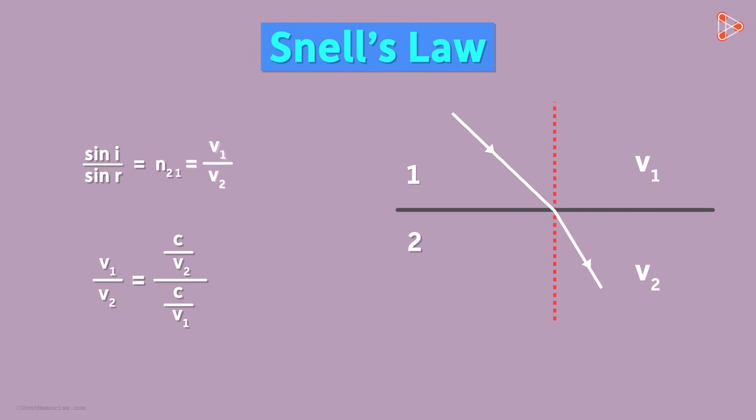That's right! This is nothing but the absolute refractive index of medium 2. And this is the absolute refractive index of medium 1. That was another way of understanding Snell's law. We can also say that sine i over sine r is N2 over N1, where N2 and N1 are the absolute refractive indices of media 2 and 1 respectively.